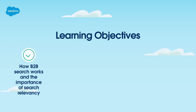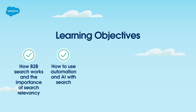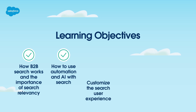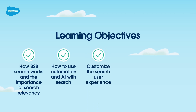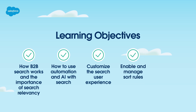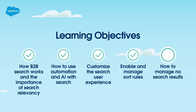We'll: one, explain how B2B Search works and the importance of search relevancy; two, describe how to use automation and AI with search; three, explain how and why to customize the search user experience; four, summarize steps to enable and manage sort rules; and five, demonstrate how to manage no search results.